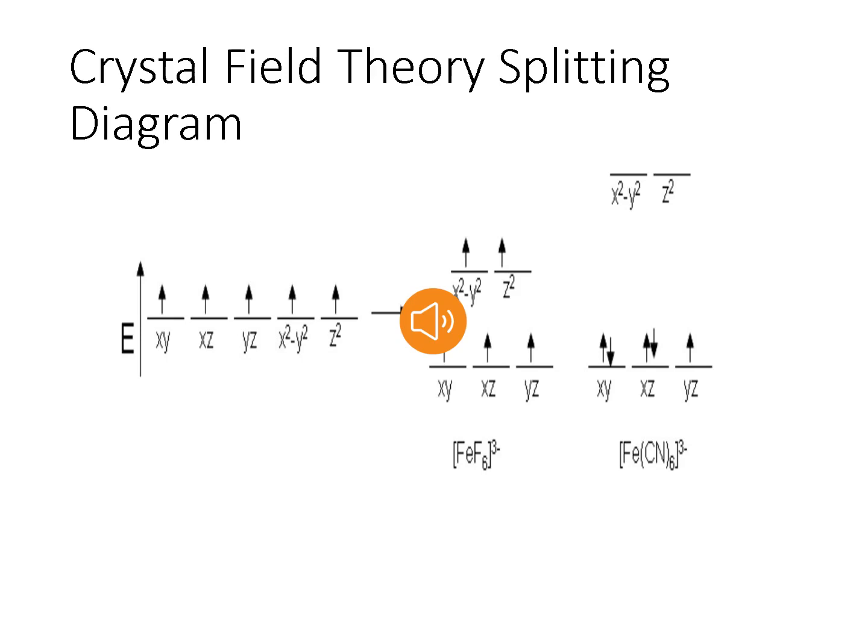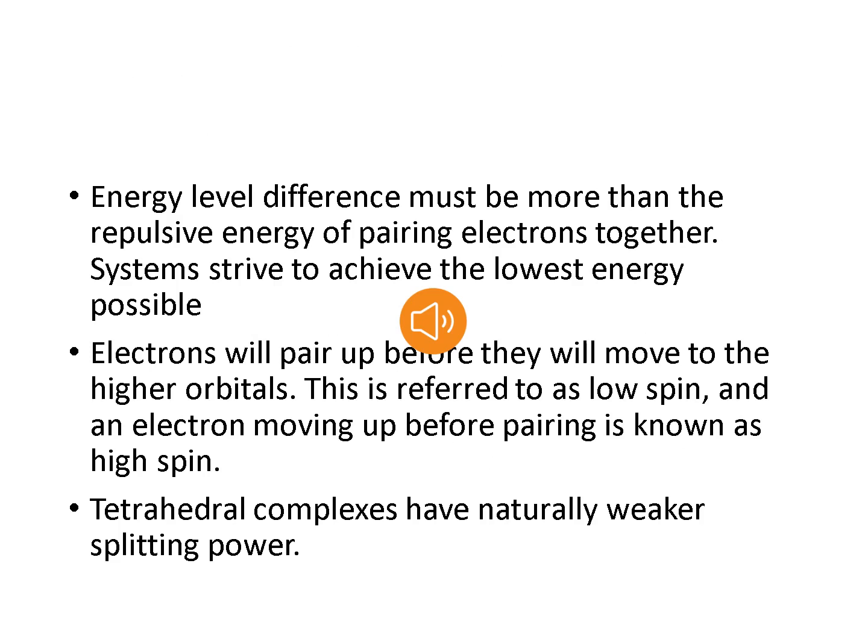In hexafluoroferrate, the weak field of the fluoride molecule produces only a small crystal field splitting, because it requires less energy for the electrons to occupy the Eg orbitals than to pair together. The energy level difference must be more than the repulsive energy of pairing electrons together, and systems strive to achieve the lowest energy possible. In the case of strong field ligands, electrons will pair up before they move to higher orbitals — this is referred to as low spin. An electron moving up before pairing is known as high spin.